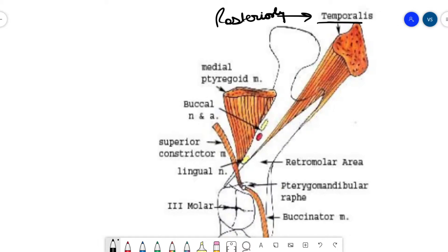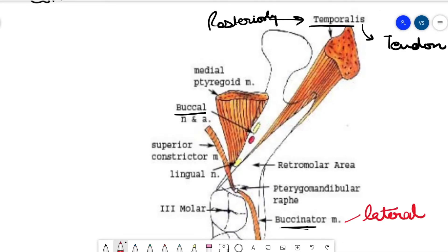Temporalis, which is basically a tendon. So tendon of temporalis posteriorly forms the boundary of the retromolar pad area and inserts at this point. The lateral boundary is formed by the buccinator muscle, medially it's the pterygomandibular raphe.